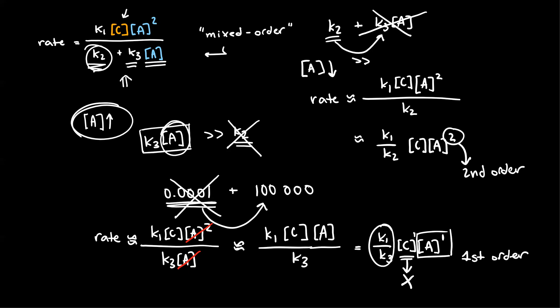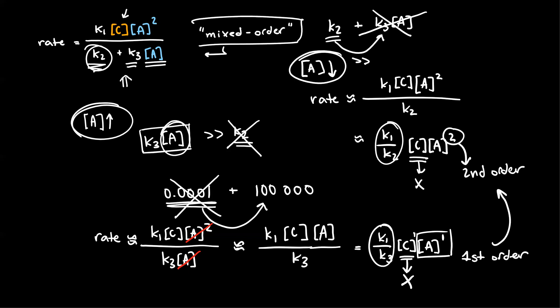This is what happens at the end of the reaction when the concentration of the reactant is relatively low. This will just be some constant, and the catalyst has no effect on the rate law. So we can see that the reaction goes from first order to second order as it progresses, and this is exactly why it is classified as a mixed-order reaction. As long as you're able to understand this from the fraction given, you're basically good to go.